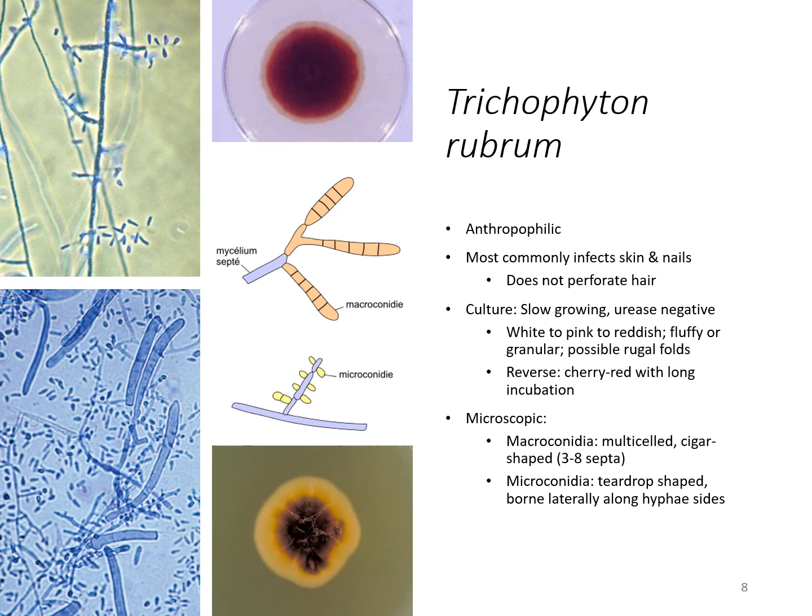With the culture — and I remind you that you do not need to know the culture appearance for the certification, however it is good to be familiar with for clinical work — this organism can be white to pink. If you're looking at it macroscopically from the top, it can be fluffy, granular, or it can have some folds. You can see in this picture where the organism has some little folds in it and just kind of heaps up.